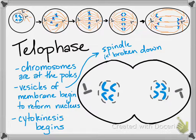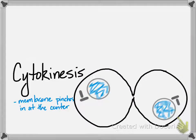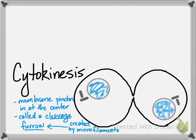Cytokinesis begins — often as soon as telophase is underway, you start to see the cleavage furrow: little indentations forming in the cell. During cytokinesis, the membrane pinches in at the center, driven by microfilaments — actin and myosin, the same proteins that move our muscle fibers. They form a ring at the center that squeezes the cell, just like a rubber band around a balloon, squeezing until the cells fully divide.